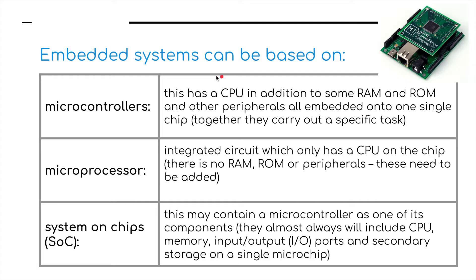Embedded systems can be based on one of three things shown in the table here. First, microcontrollers — a CPU in addition to some RAM and ROM and other peripherals all embedded onto one single chip; together they carry out a specific task. Second, a microprocessor — an integrated circuit which only has a CPU on the chip; there is no RAM, no ROM or peripherals, and these need to be added. Finally, system on chip, or SOC — this may contain a microcontroller as one of its components and always includes a CPU, memory, inputs and outputs, ports and secondary storage on a single microchip.